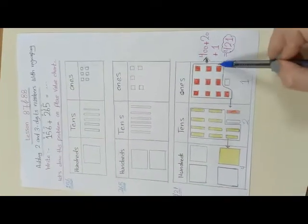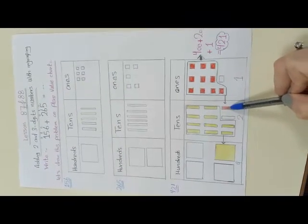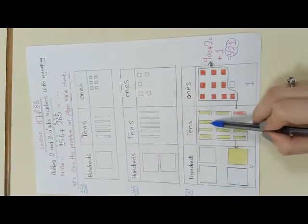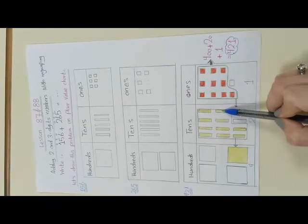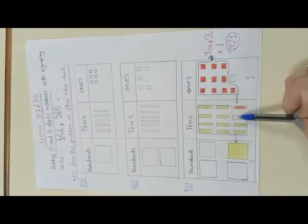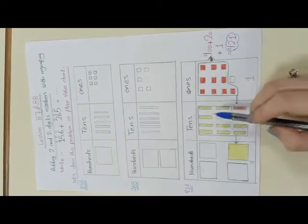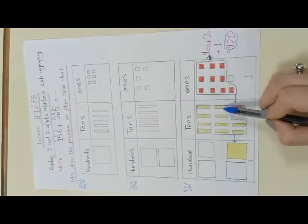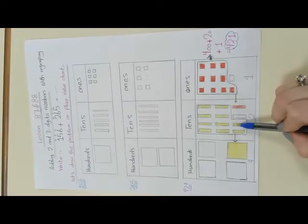I regroup 10 ones as 1 ten and move to the tens place. In the first number I have 5 tens: 1, 2, 3, 4, 5. And in the second number I have 6 tens: 1, 2, 3, 4, 5, 6. Now I will count all I have including the regrouped ten: 1, 2, 3, 4, 5, 6, 7, 8, 9, 10, 11, 12.